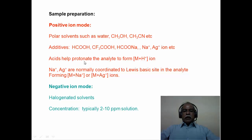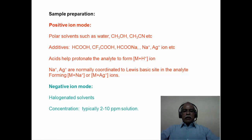The acid helps protonate the analyte to form the protonated ion. Sodium and silver are normally coordinated to the Lewis basic sites of the analyte, forming M+Na and M+Ag ions. One can perform ESI-MS either in positive ion mode or negative ion mode. Typically halogenated solvents are used in the negative ion mode. In both methodologies, typical concentrations of about 2 to 10 ppm solution are necessary for analysis.